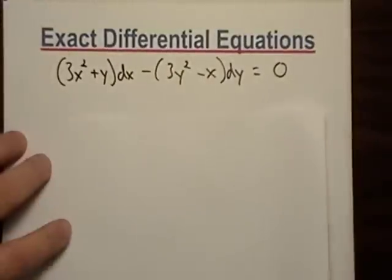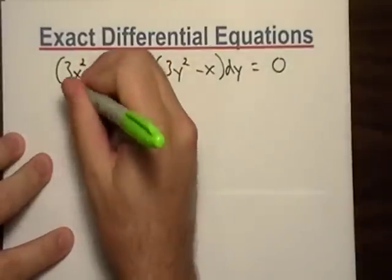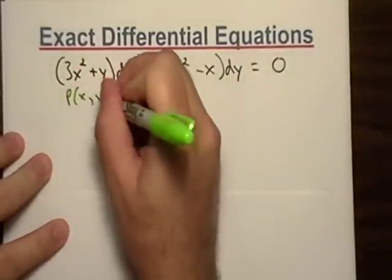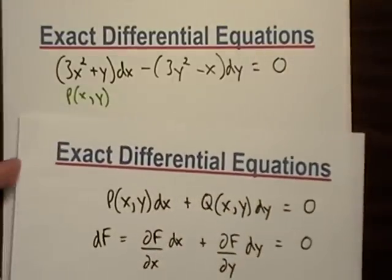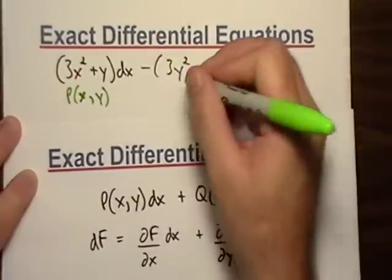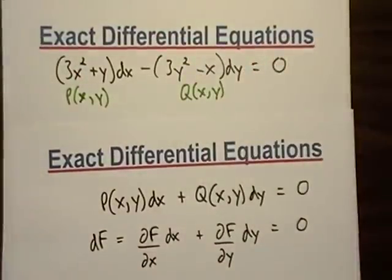Okay, so what do we got to do first? Let's just make sure they're exact. So, I'm not going to, I don't want to clog up my paper, but, well, first of all, I've got a differential dx right there, so this would be my P(x,y), if I compare functions. And, this would be my Q(x,y), if I were to compare functions.